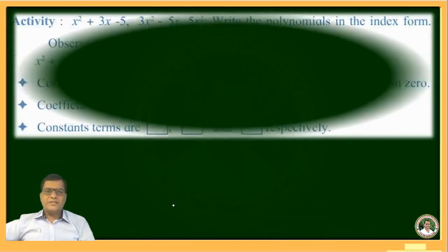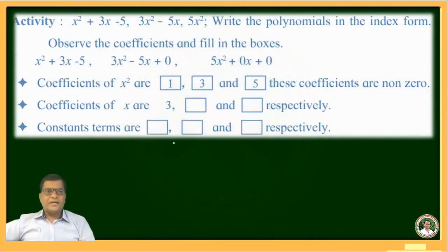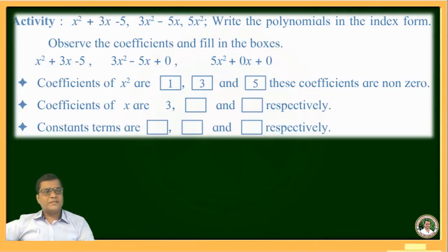Now we will see one activity. The activity is: for the polynomials x² + 3x − 5, 3x² − 5x, and 5x², write the polynomials in index form, observe the coefficients, and fill in the boxes. The coefficients of x² are 1, 3, and 5 respectively.